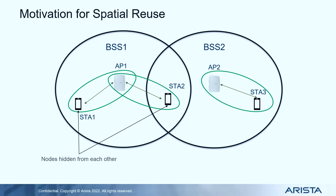The second problem is what we call the exposed node problem. If we add one more link in a neighboring BSS operating on the same channel, then when AP2 is transmitting to STA3, STA2 has to wait until that transmission is over before it can transmit to AP1. It is quite possible that STA2 and AP2 could have transmitted in parallel without interfering with each other, because their intended recipients were far apart. But given the way CSMA works, it's a very conservative scheme — it tries to be polite — and hence causes inefficiency in the system.